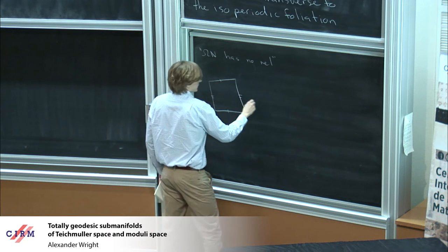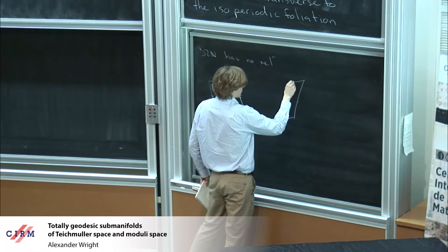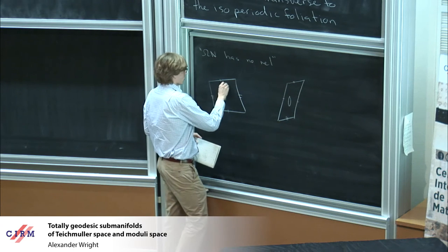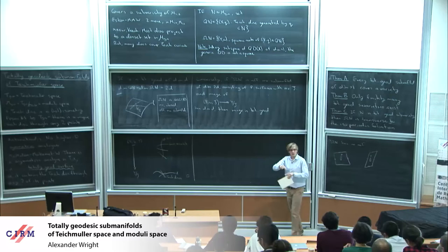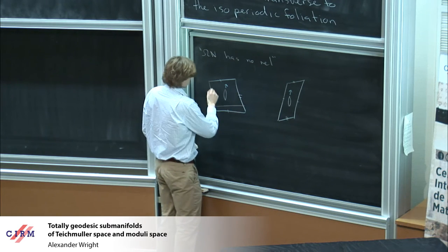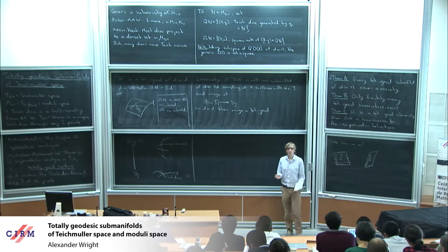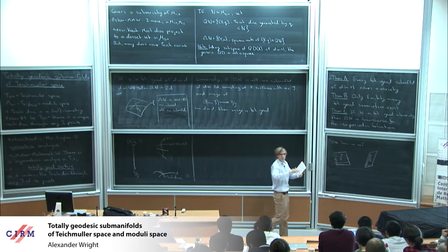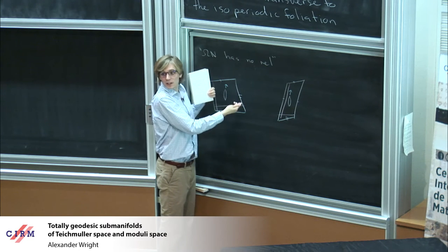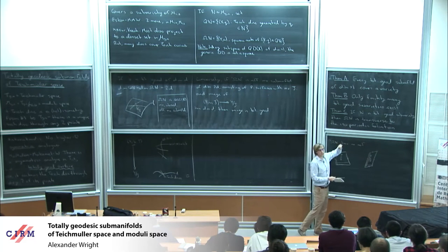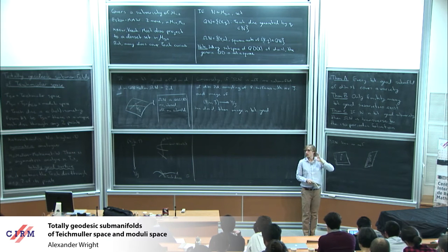You might say colloquially that Ω(N) has no rel. The isoperiodic foliation changes the distances between the zeros of ω without changing anything else. For example, with the slit torus construction you glue two tori along a slit; when you make the slit longer or shorter, the absolute periods of cycles spanning homology don't change. That's the foliation that doesn't change the periods of the absolute homology cycles.